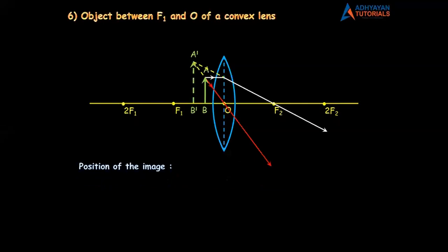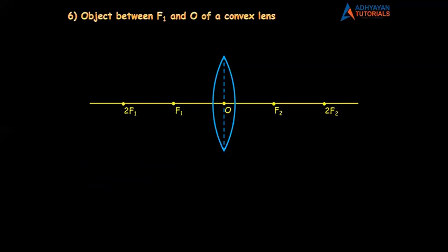Now start drawing this diagram step by step. Be ready with your scale and pencil and draw the basic bits quickly. Draw the principal axis. You will get two points on paper, making nine points above. The distance between each should be two centimeters. The center most point is O, right side F2, right side 2F2, left side F1, and left side 2F1.